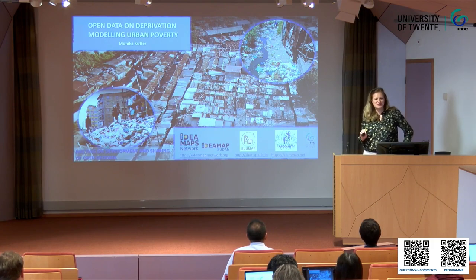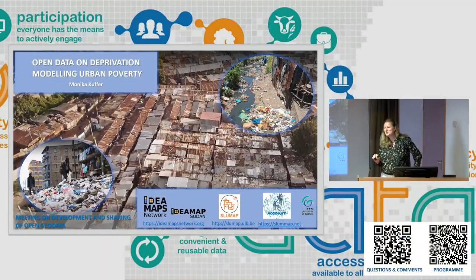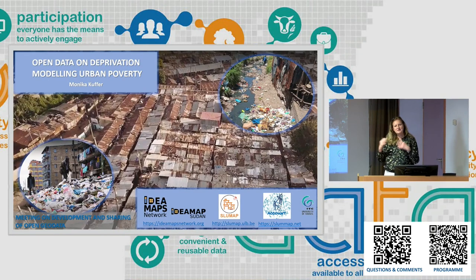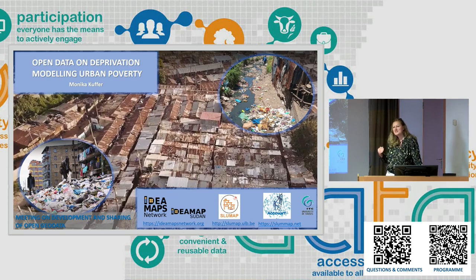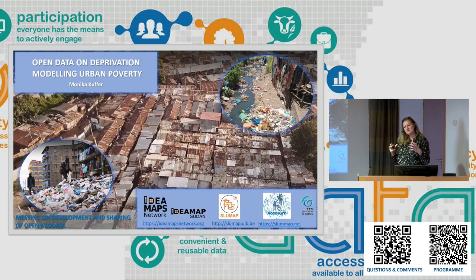I will talk about urban deprivation, which is maybe an alien concept for the non-social scientist here in the room. What I'm talking about is a multidimensional understanding of poverty. Typically, you see areas like this, like in Nairobi — Kibera — which is normally called in common language slums, informal settlements. Places where people are deprived from basic services, from adequate housing conditions, but also a lot on environmental conditions. So, a lot of things play together to make an area deprived.